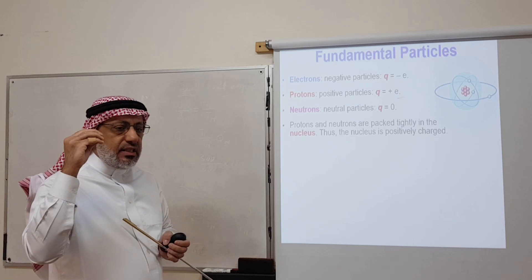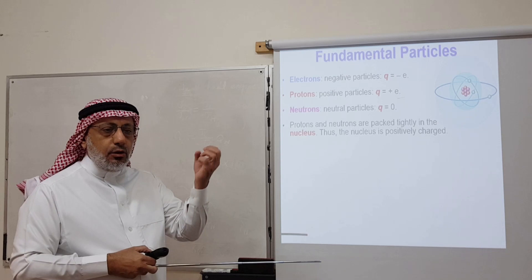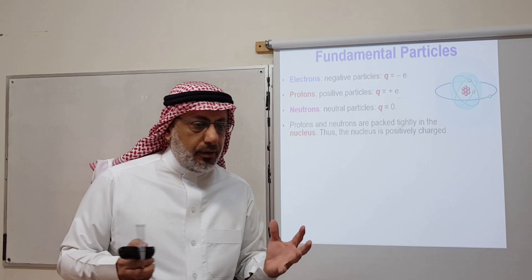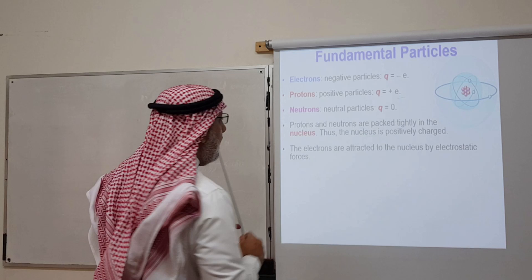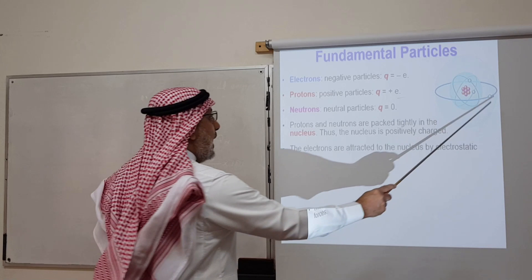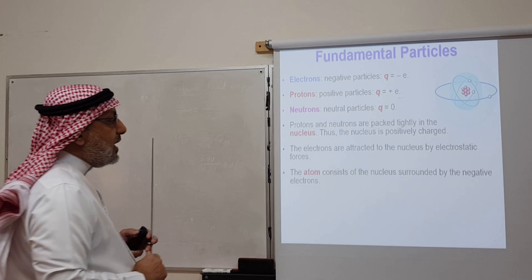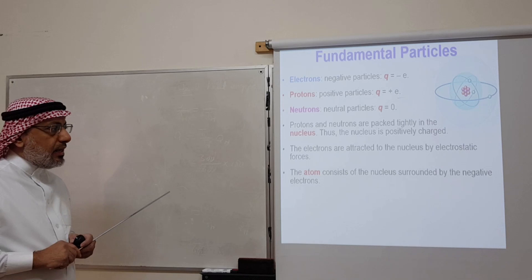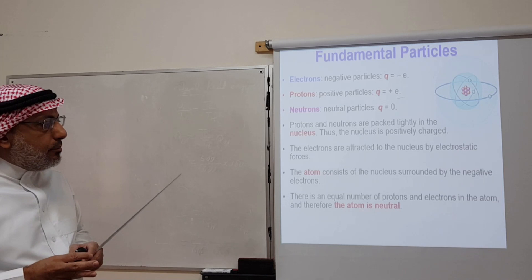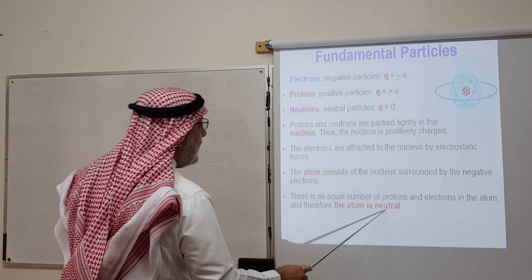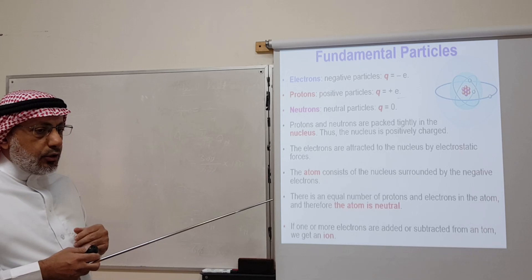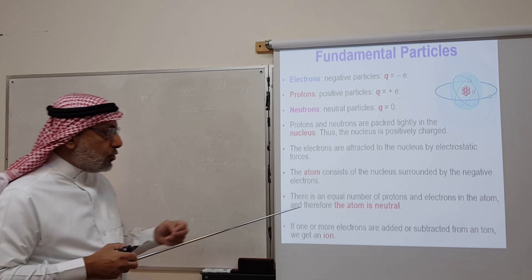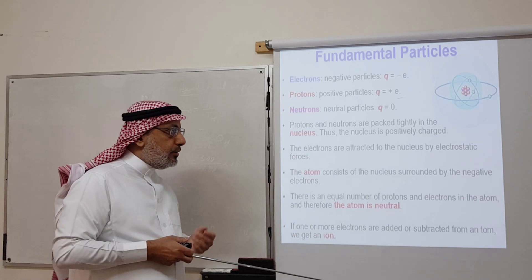A key question is: how can so many positive protons stay inside the nucleus without repelling each other and disintegrating it? The atom consists of the nucleus surrounded by negative electrons. There is an equal number of protons and electrons in a neutral atom, making it electrically neutral. If you remove or add one or more electrons to an atom, the atom becomes an ion — a charged atom.